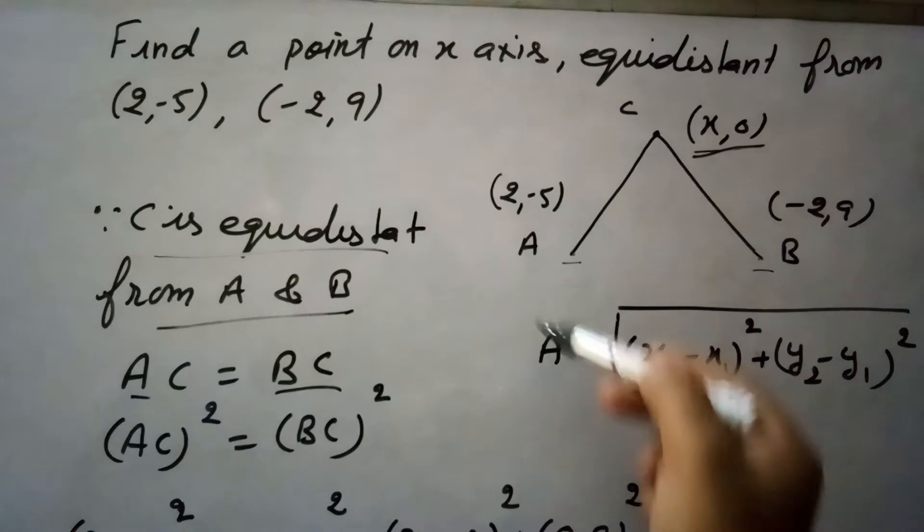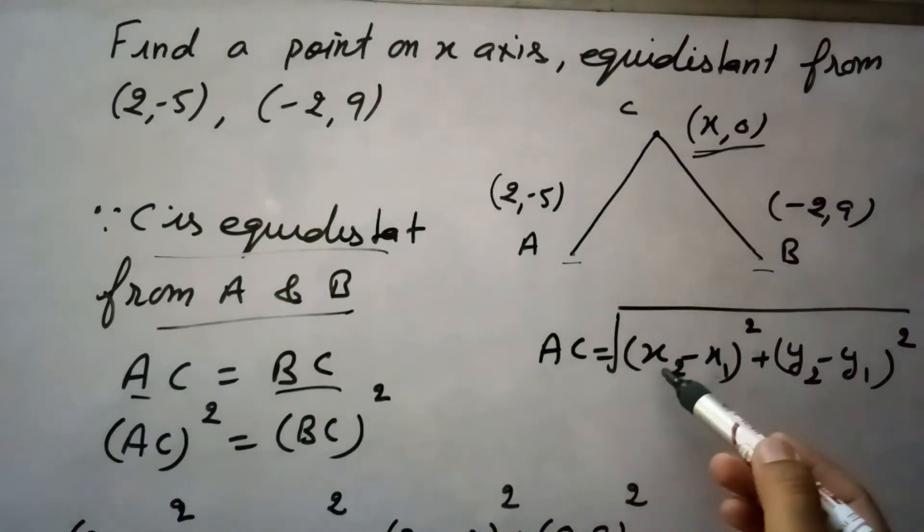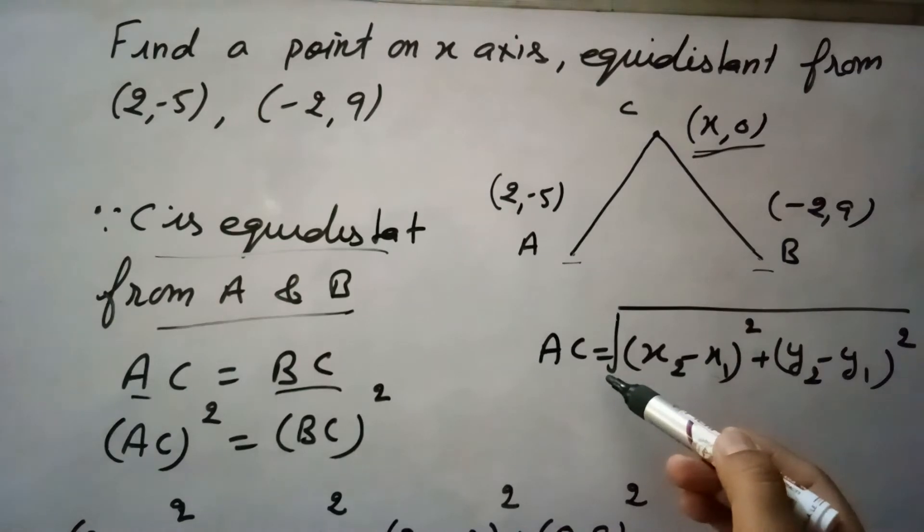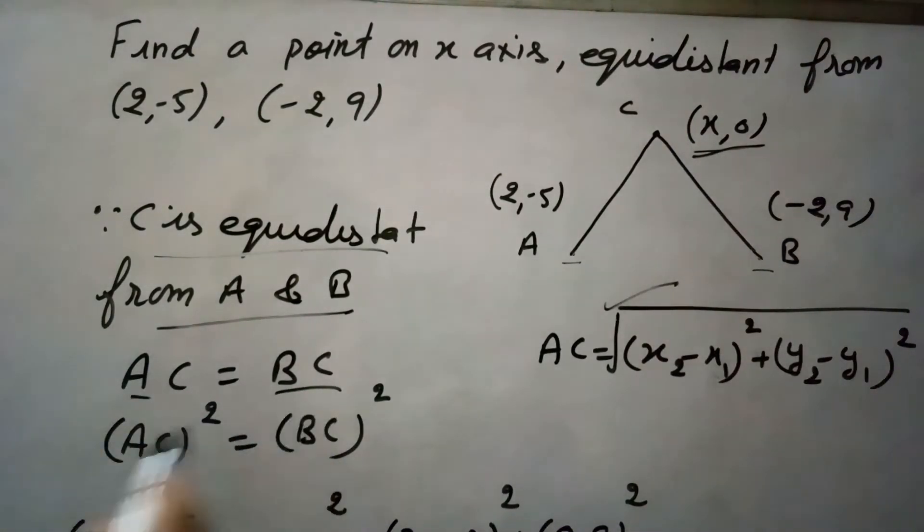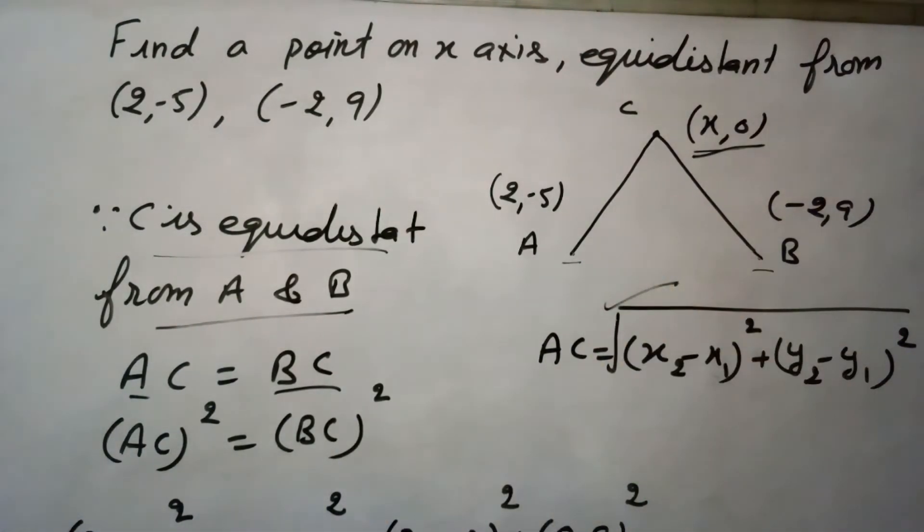The distance formula is x2 minus x1 whole square plus y2 minus y1 whole square, in the square root. So to remove this square root what I did here, I simply squared both sides. So taking square on both sides, this square root need not be written here. So directly I will use now the distance formula here.